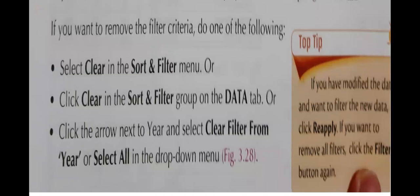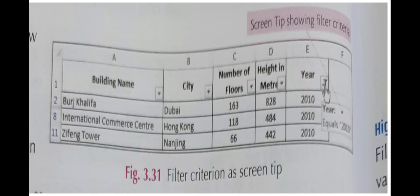Basically you can say filter that you have a lot of data and you want to see selectively or choose, so you can see that data. So you can say that if you want to remove the filter criteria, do one of the following. First, select clear in the Sort and Filter menu. Click clear in the Sort and Filter group on the data tab, or click the arrow next to year and select clear filter from year, or select all in the drop-down menu.